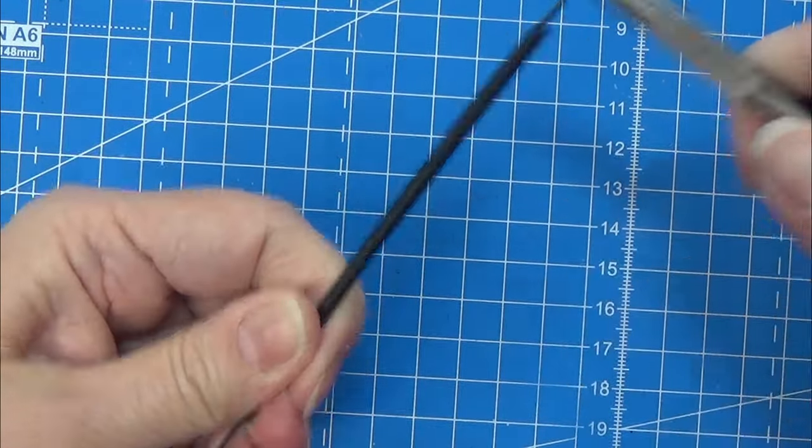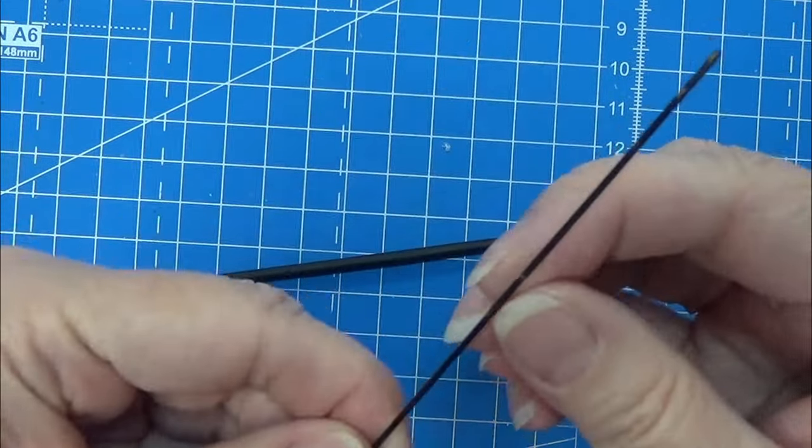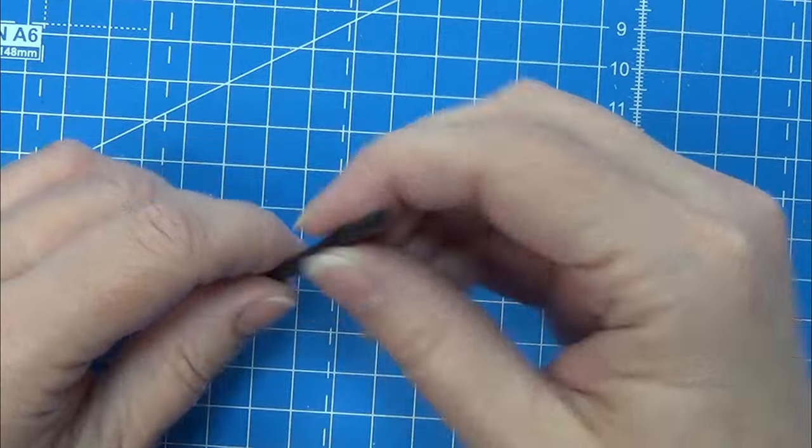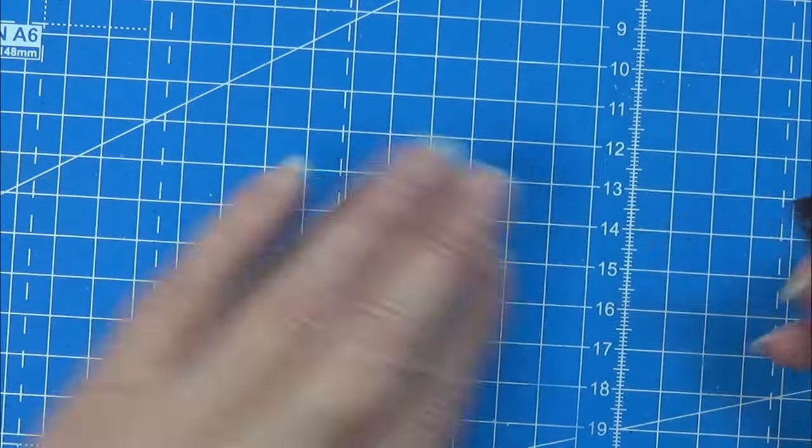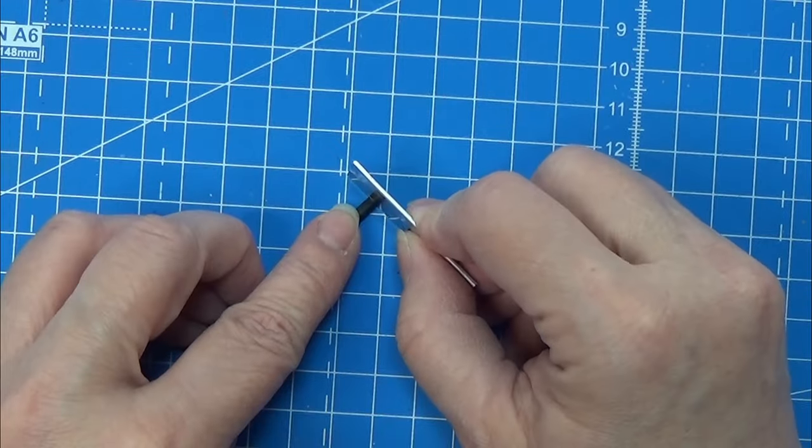And I am using this plier to grip the knitting needle and then carefully twisting it and pulling off the cane here. And now you can just slice it and use it for whatever you want to.